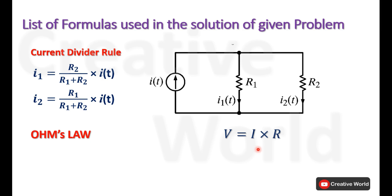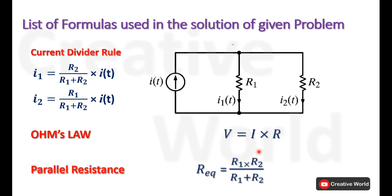According to Ohm's law, voltage across any resistance R is always equal to the product of the current through that resistance and the value of the resistance itself. The parallel equivalent resistance formula will also be utilized. R equivalent of two parallel connected resistances is calculated by taking the product of both resistances divided by their sum.